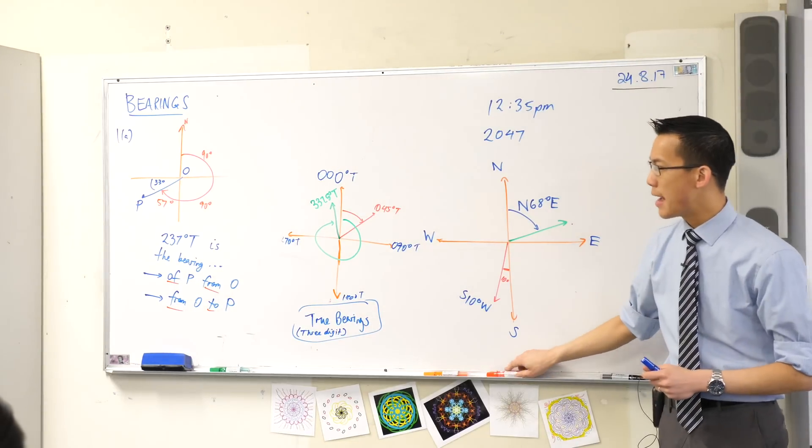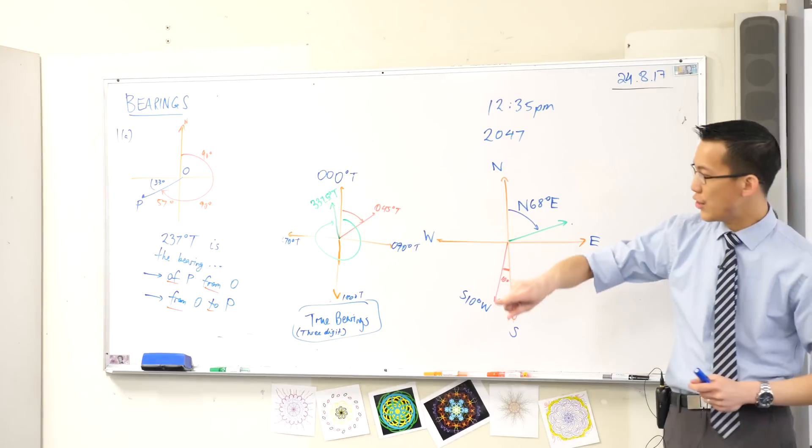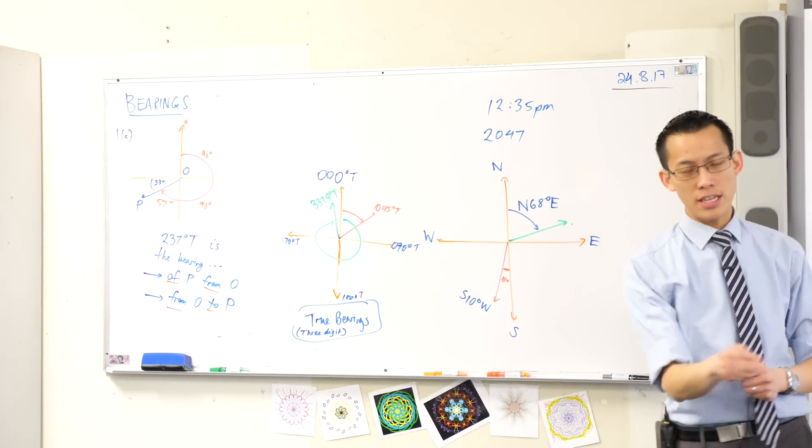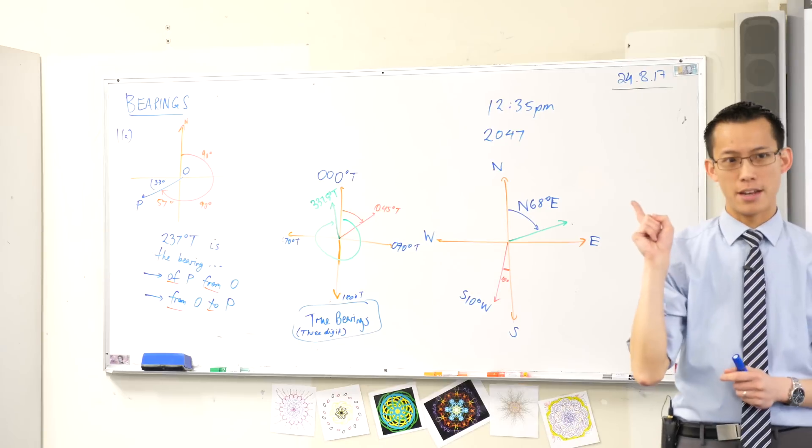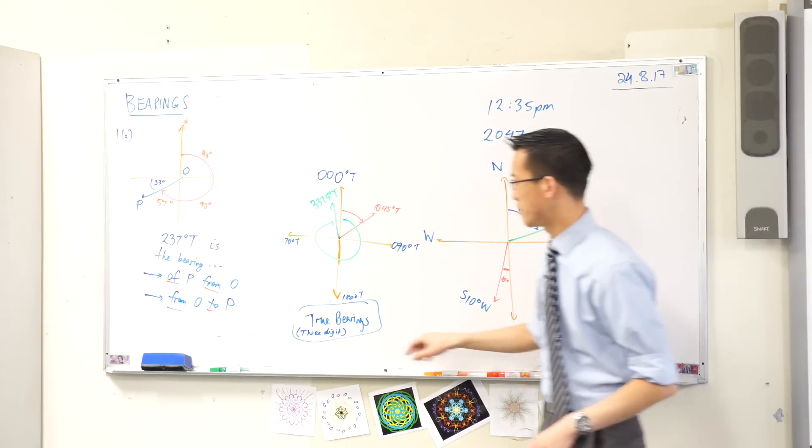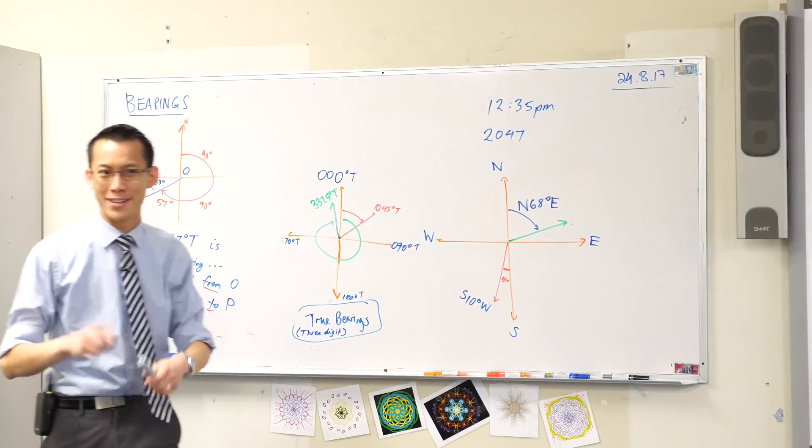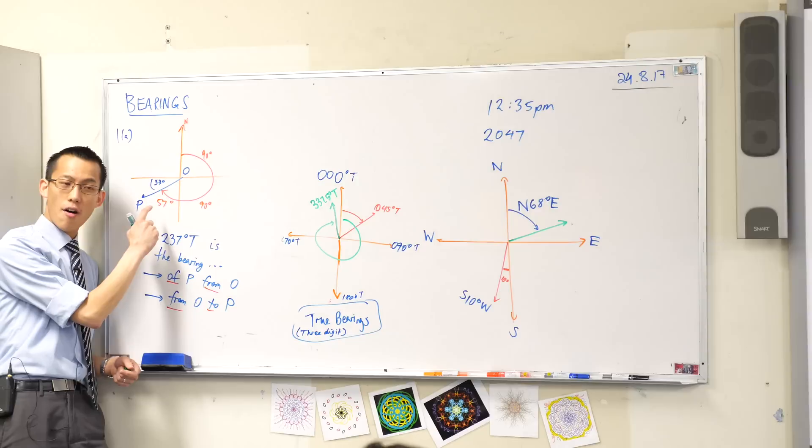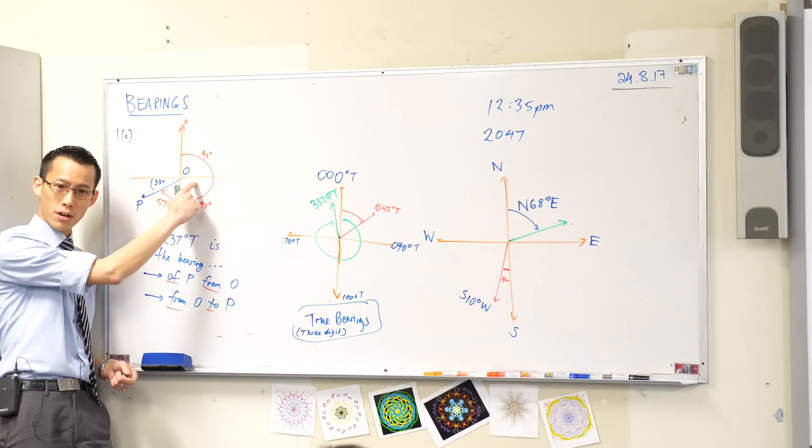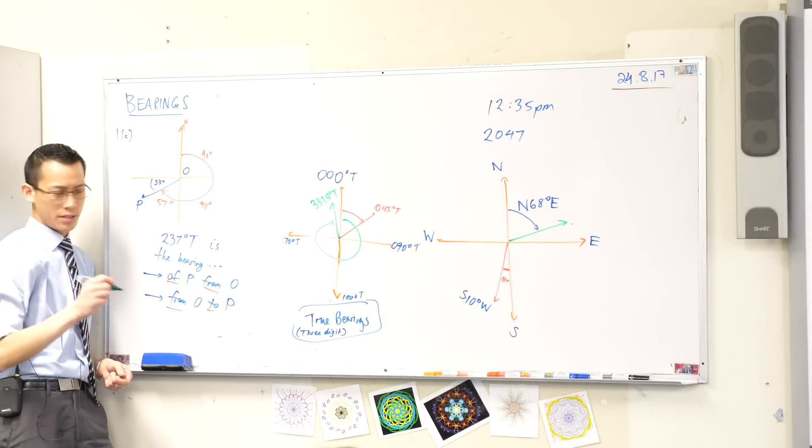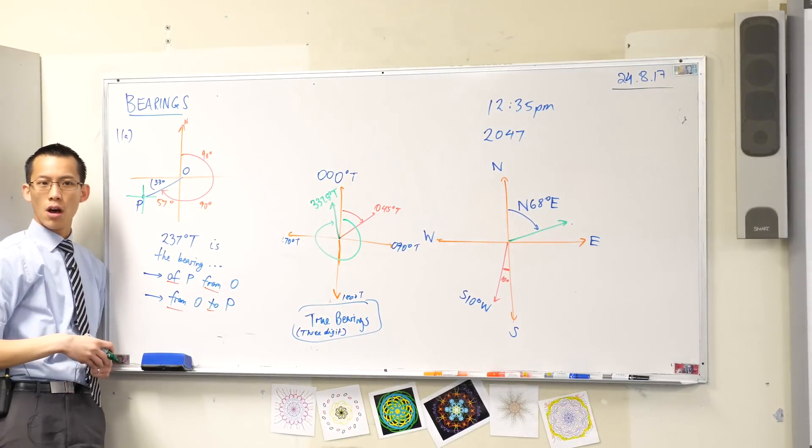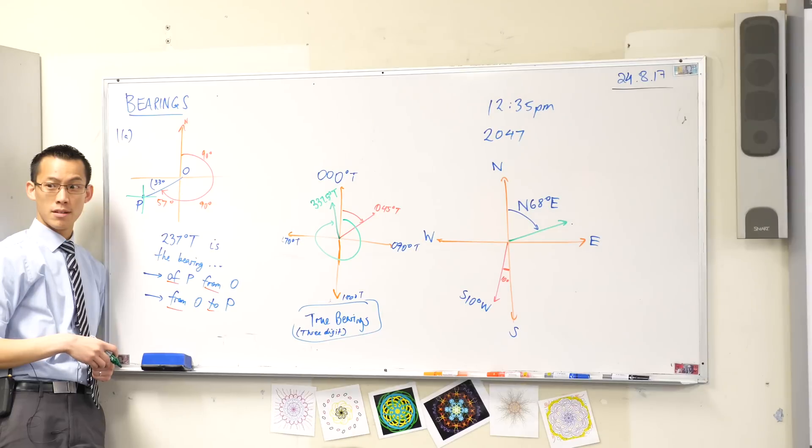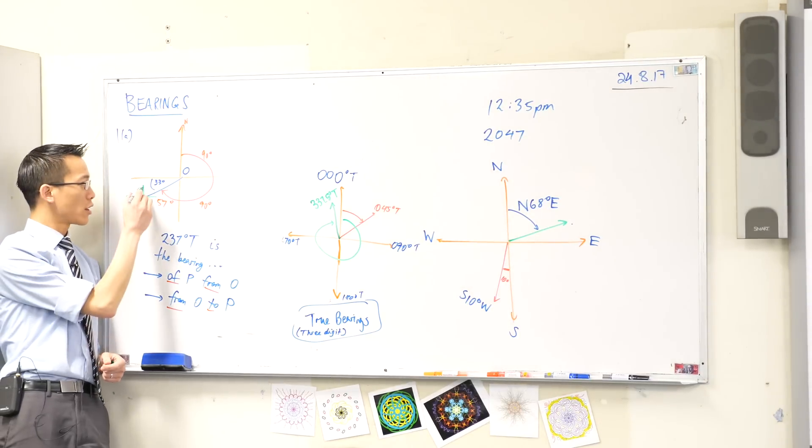Because the bearing from P to O is different. Think about it. It's a different question. The question hasn't asked you, but I'm asking you now. If I wanted to find the bearing from P to O, remember I asked you to draw this a second ago? You're going to need a new little compass over here, right? We're going to have a look at this.